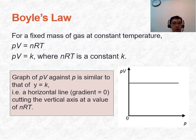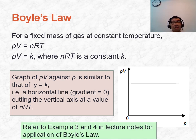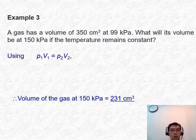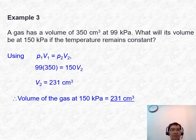Pause the recording and take the next 5 to 8 minutes to tackle examples 3 and 4. To solve example 3, use the relationship P₁V₁ = P₂V₂ for Boyle's Law, since we are talking about the same mass of gas at the same temperature. Substituting values gives the volume of gas at 150 kPa as 231 cm³.